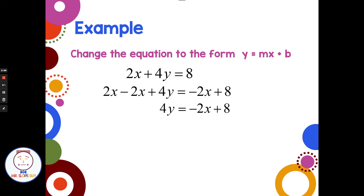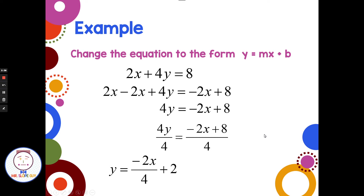The only thing left to get it in slope-intercept form is to get rid of this 4 in front of the y. Since 4 is being multiplied to y, I use the inverse operation and divide by 4. If I divide the left side by 4, I also divide the right side by 4. So 8 divided by 4 is 2. Negative 2 divided by 4 doesn't go in evenly, so I leave that as a fraction. And 4 divided by 4 gives me 1y, or y. I get y equals negative 2x over 4 plus 2, and negative 2 over 4 reduces to negative one-half.